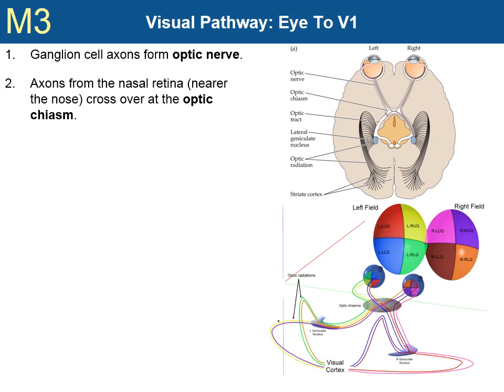Looking at the lower figure, the large ovals at the top represent the area of the world seen by each eye, broken into quadrants. For the left field, red and blue refer to the left upper and left lower quadrant of the visual field. Yellow and green refer to the right upper and right lower quadrants. Notice how these quadrants are represented on the retina. Looking at the left eye, you can see that green is in the upper right corner, because the retinal image of the world is upside down and backwards.